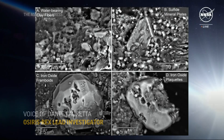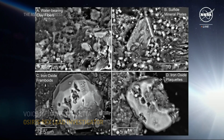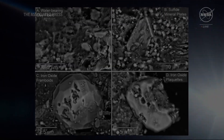The first panel there in the upper left shows the water-bearing clay minerals, and they have this fibrous kind of structure. We call this serpentine because they look like serpents or snakes inside the sample, and they have water locked inside their crystal structure.